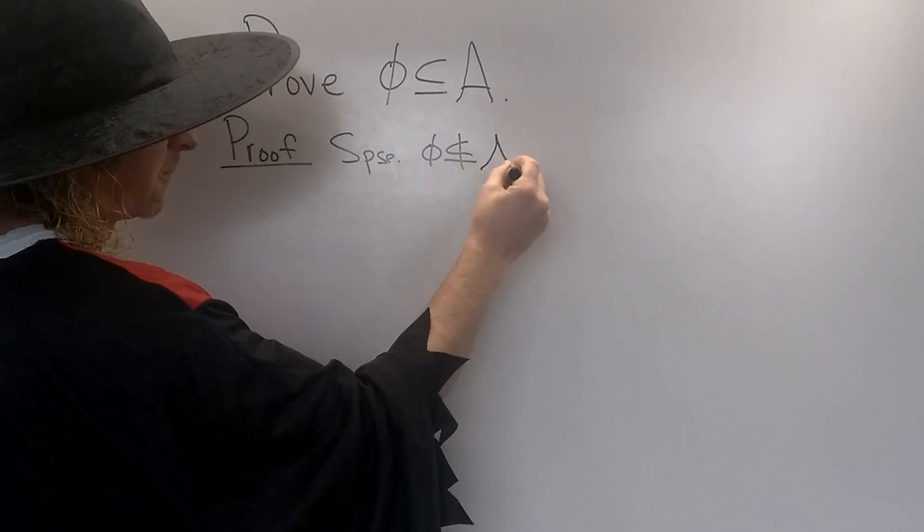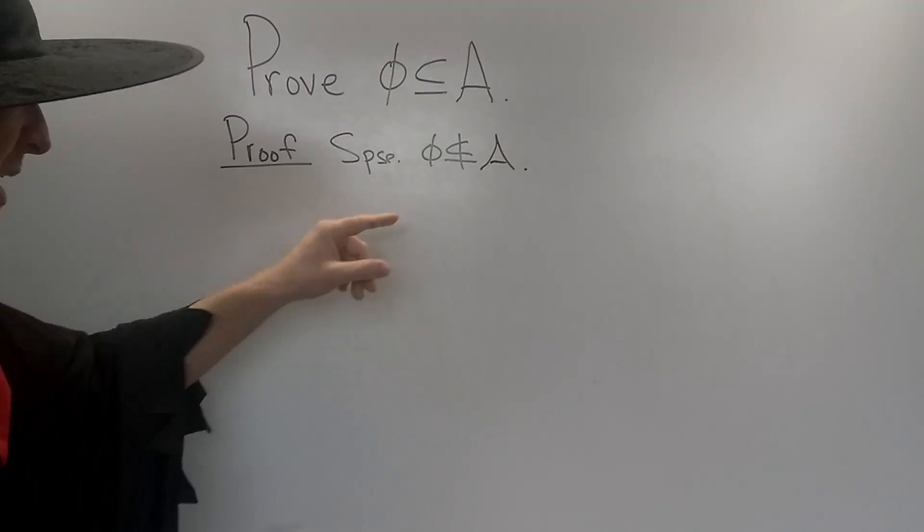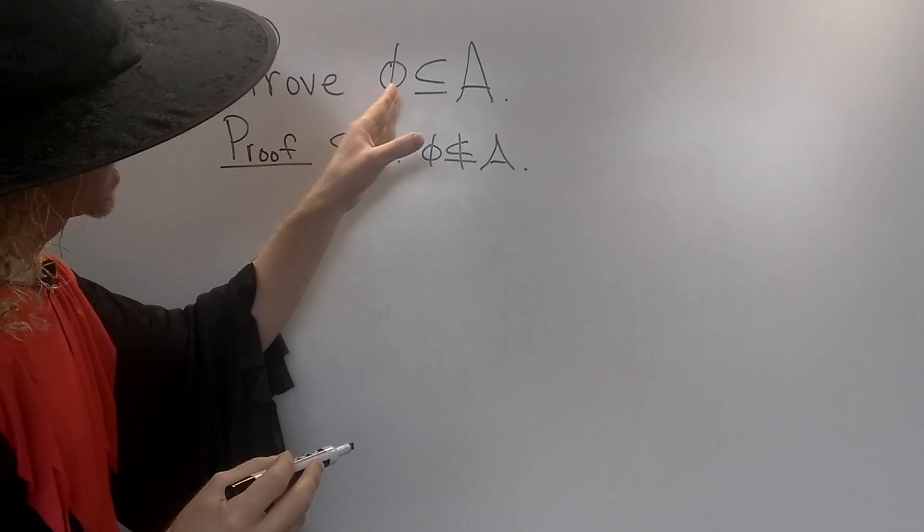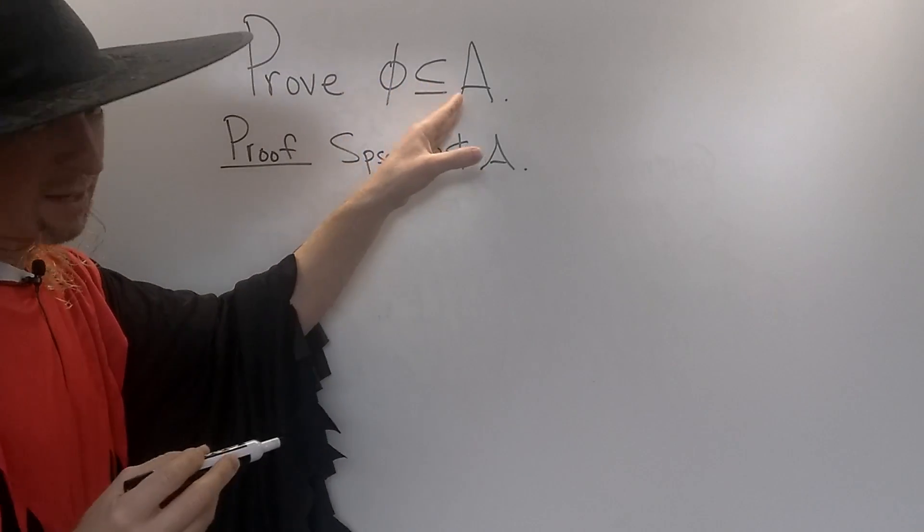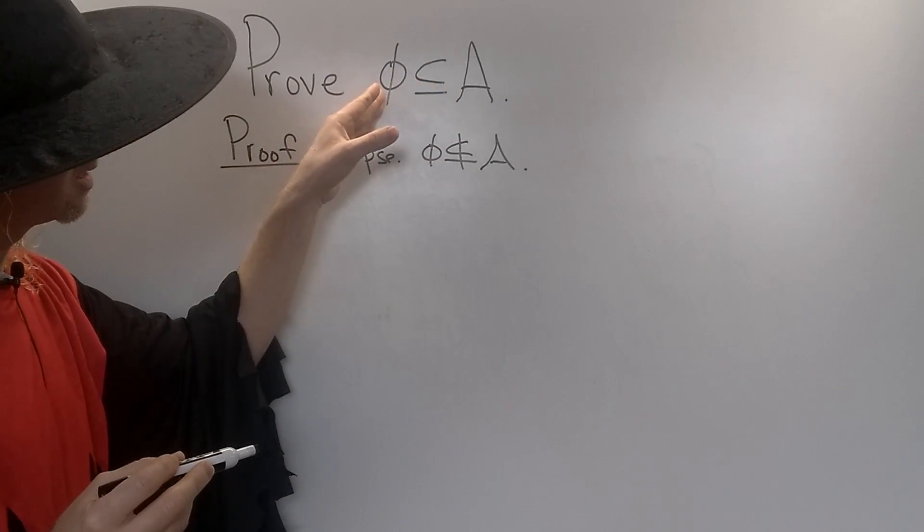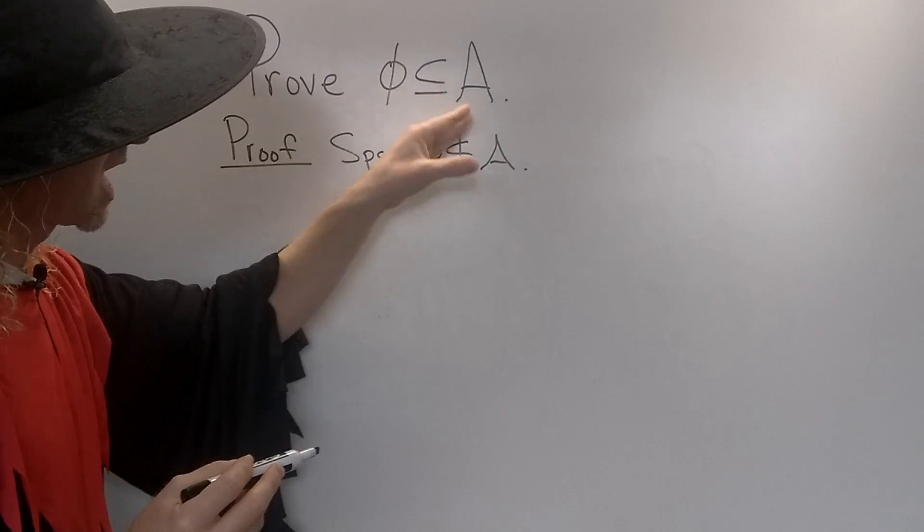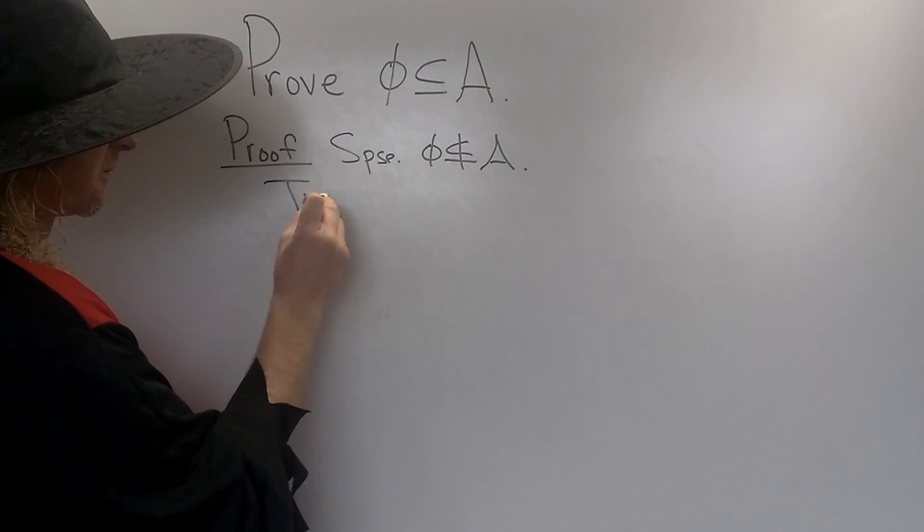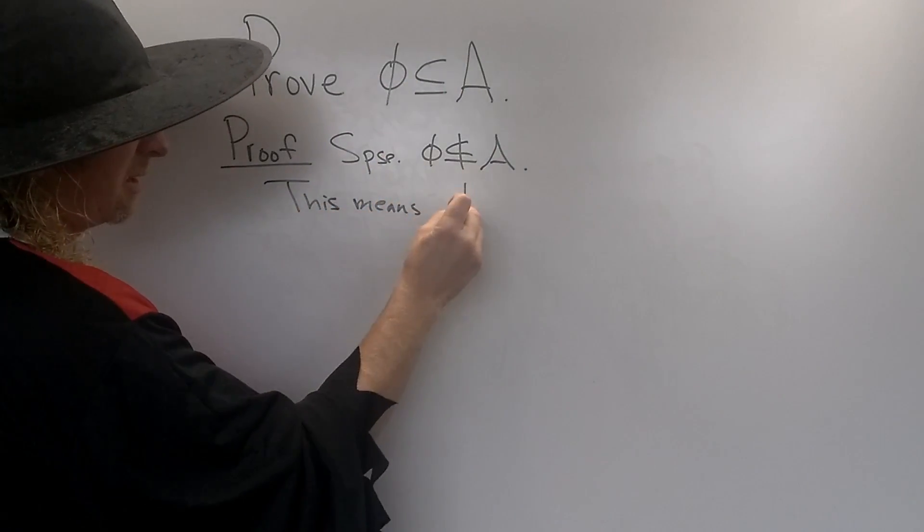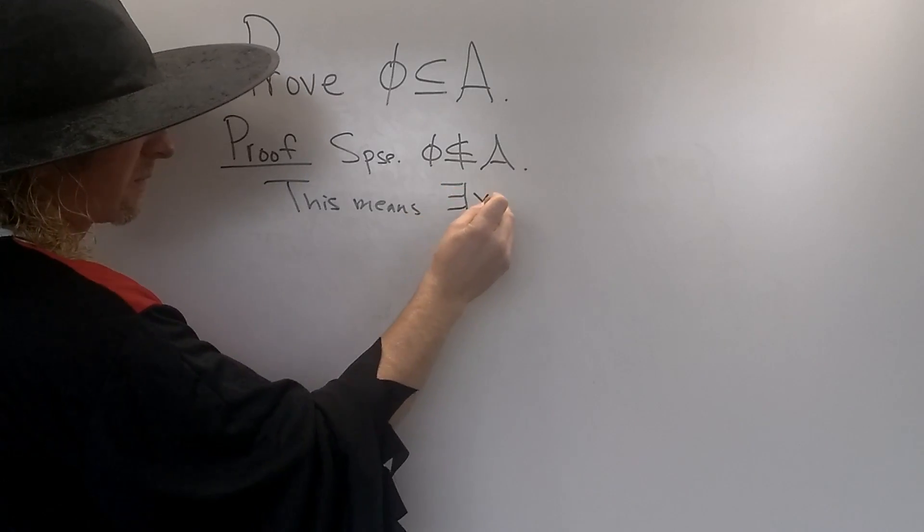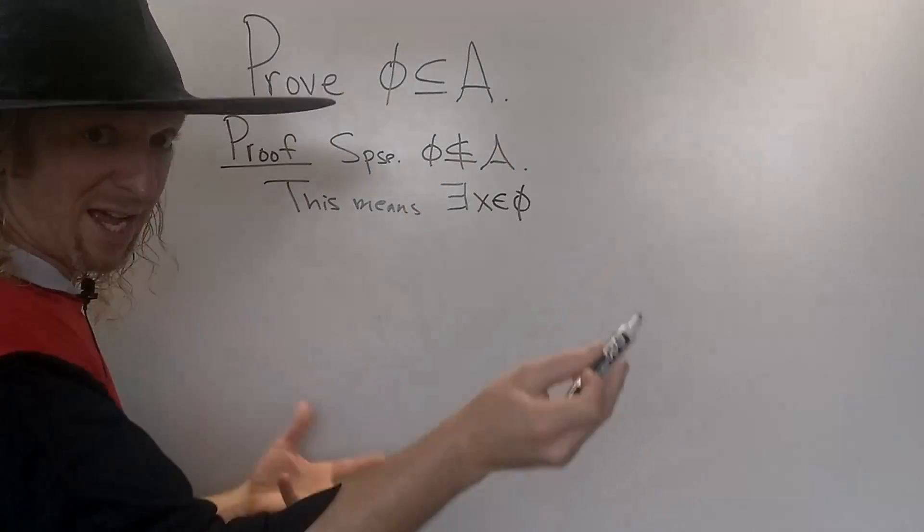That means - what does this mean? Well, for the empty set to be a subset of A, that means every element in the empty set is also in A. So if it's not a subset, this means that there is an element in the empty set that is not in A.